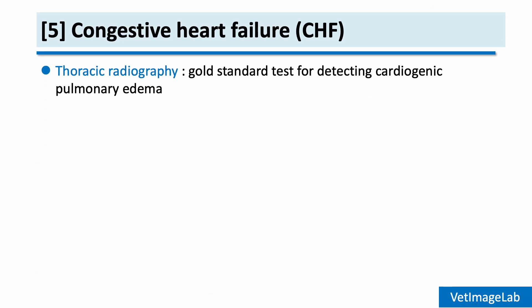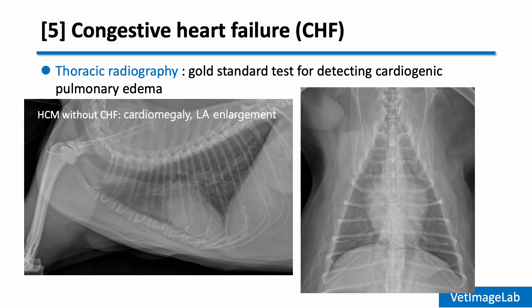Finally, we should check for evidence of congestive heart failure. Thoracic radiography remains the gold standard for detecting pulmonary edema. Here's a radiograph of a cat with HCM but without congestive heart failure. You can see cardiomegaly and left atrial enlargement, but the lung fields are still clear and pulmonary vessels are not distended.